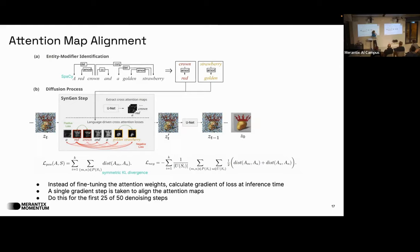They create a syntactic tree using a syntactic parser to extract modifier-noun pairs. Attributes belonging to the same noun — like 'golden' and 'strawberry' — should point to similar pixel representations; attributes belonging to different nouns should be pushed apart. They create a contrastive loss over the attention maps and, rather than fine-tuning the attention weights, apply a single gradient step at inference time to align the attention maps during the first 50% of the denoising steps.